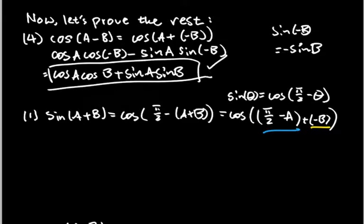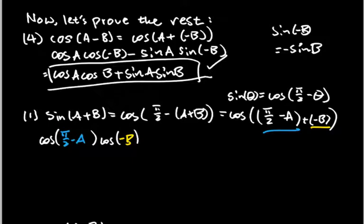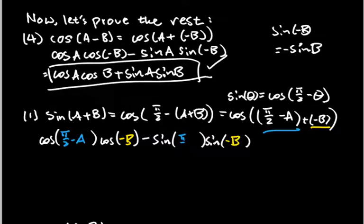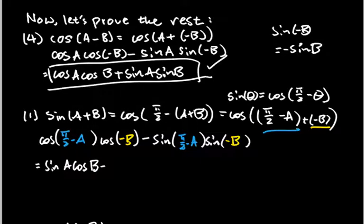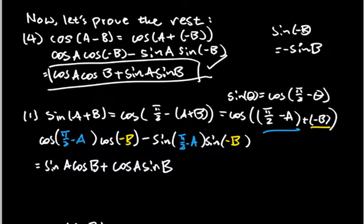I'm going to color-code those. We'll have cosine of the first angle, which is (π/2 − a), times cosine of the second angle, which is negative b. Since there's a plus in there, we have minus sine of the first angle times sine of the second angle. Now, cosine of (π/2 − a) equals sine(a), and cosine of negative b is just cosine(b). Sine of (π/2 − a) equals cosine(a), and sine of negative b is negative sine(b) — we already applied the negative sign in front. So here is the first identity: sin(a + b) = sin(a)cos(b) + cos(a)sin(b).